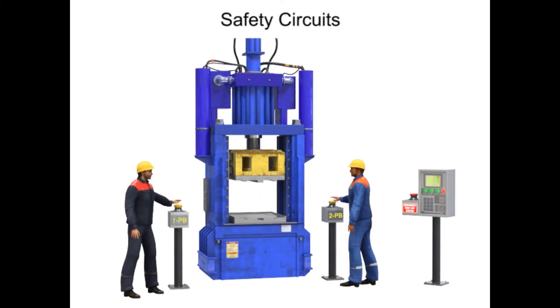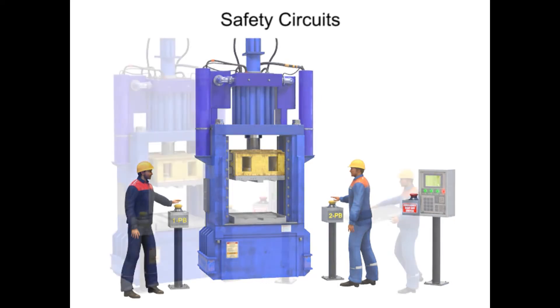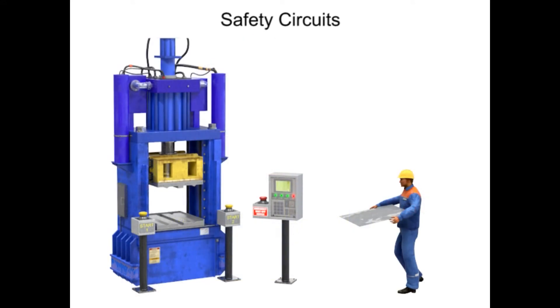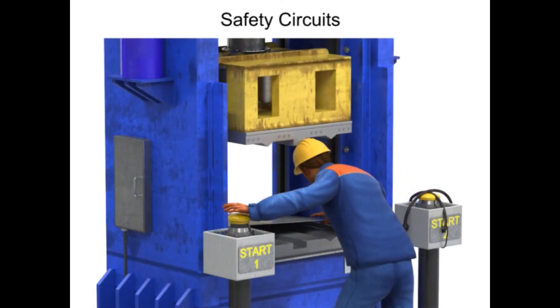While two-hand controls wired in series is ideal for machines with two operators, it becomes unsafe when only one operator is present. Although two buttons are still required, it becomes much easier for a single operator to tie or weigh down one button, allowing unsafe operation.